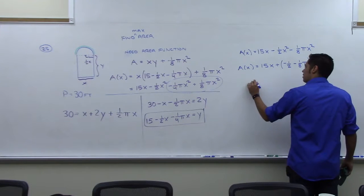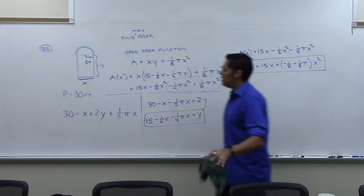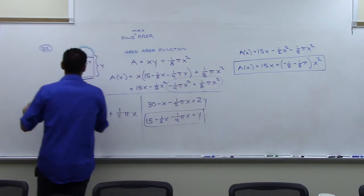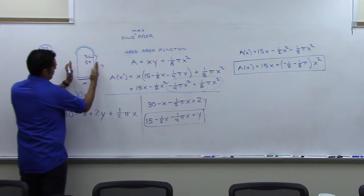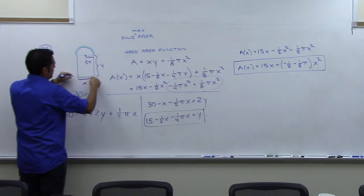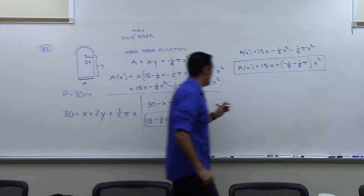Now, what about domain of this? Because I have my area function. Well, the smallest that x could be would be zero, because you could go and flatten this out, and then use all of your perimeter for the up. So we could have zero for x.